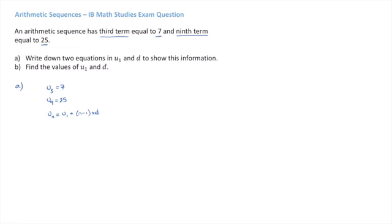In the case of u3 equals 7, that means when n equals 3, this formula for the nth term should equal 7. So we can say 7 equals u1 plus 3 minus 1 times d. That leads us to 7 equals u1 plus 2d. There we go, this is one equation involving u1 and d, which is what we're after.